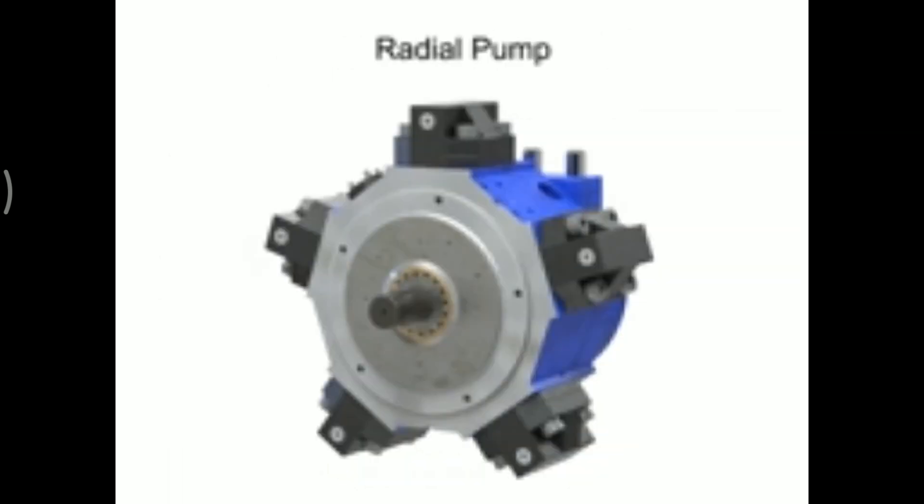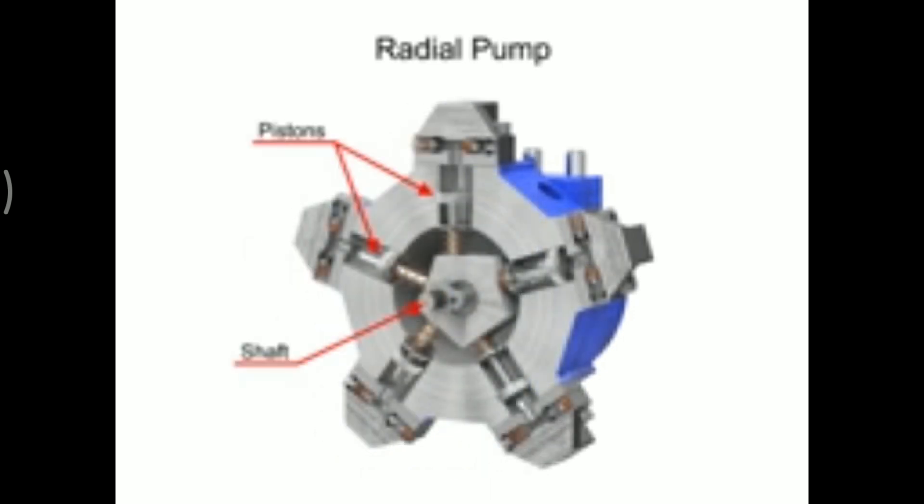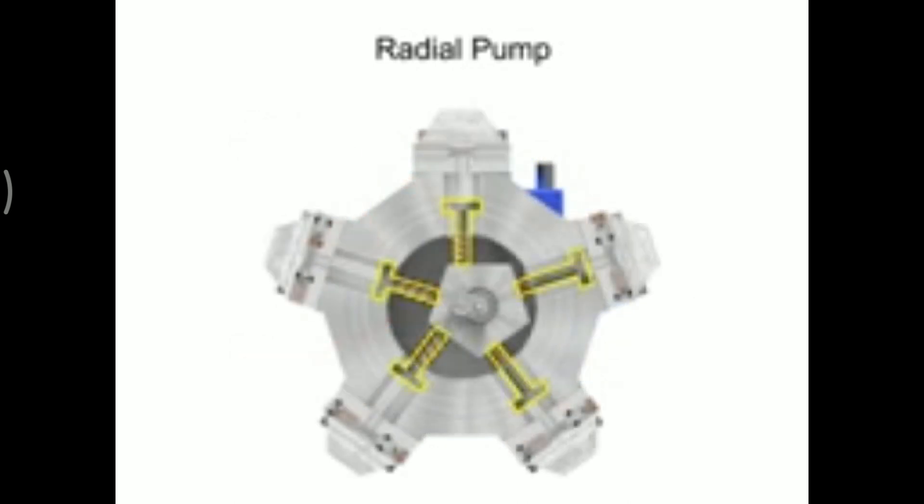Radial pumps are designed so the pistons stroke in a direction at right angles to the shaft. The pistons are arranged like wheel spokes around a cylinder block, with an eccentric central cam mounted on a drive shaft.